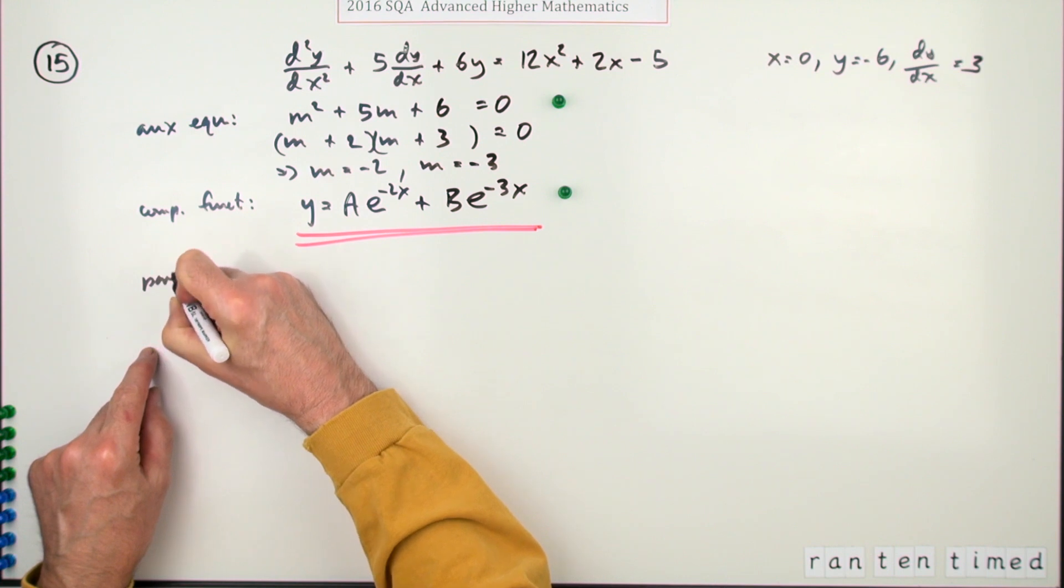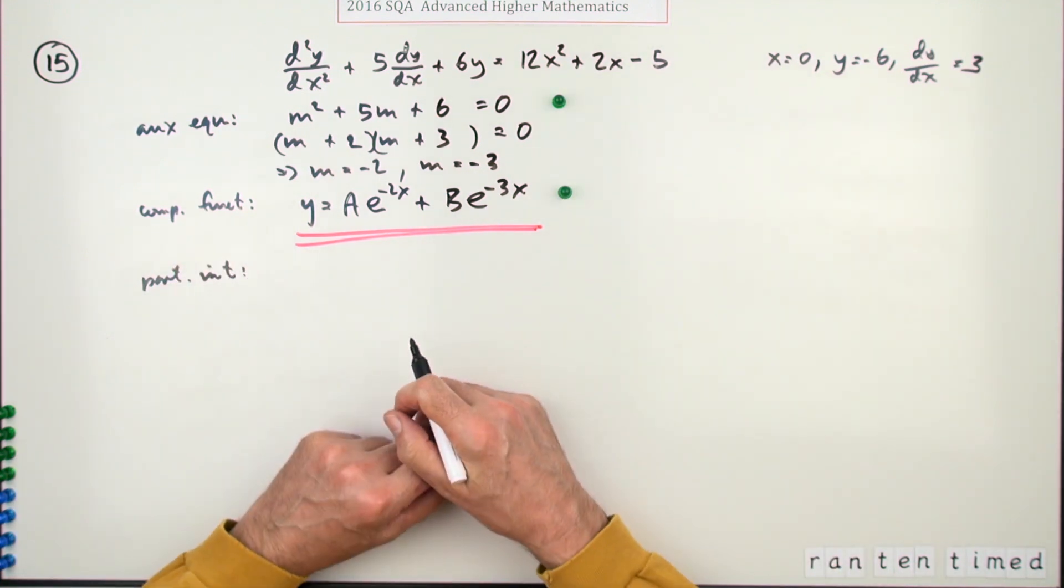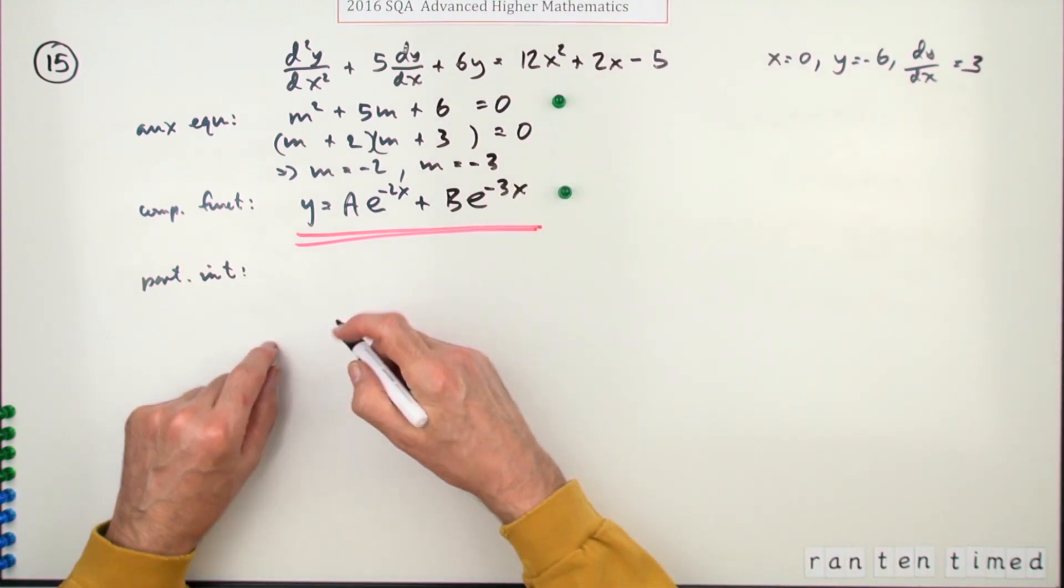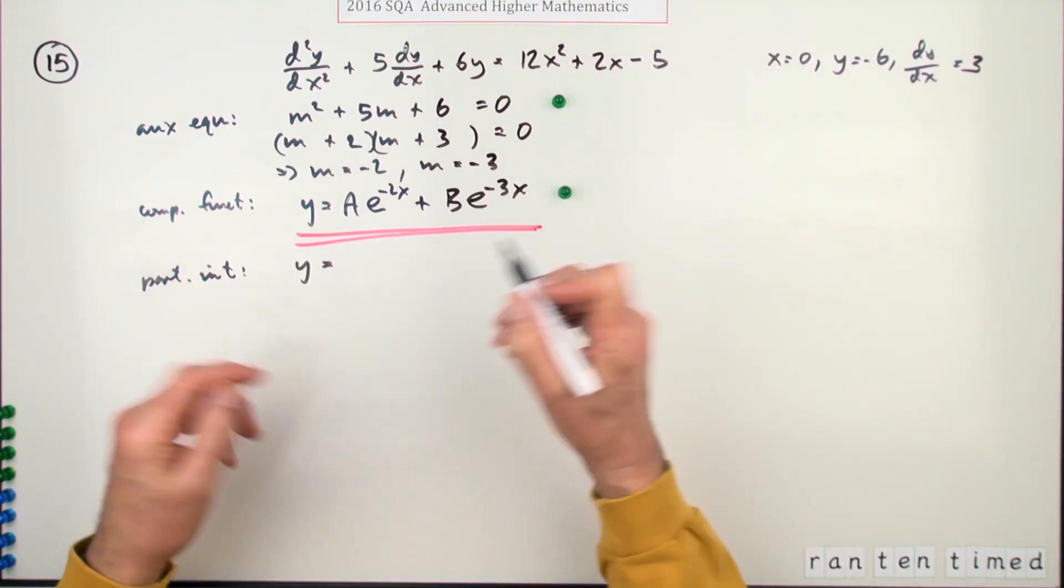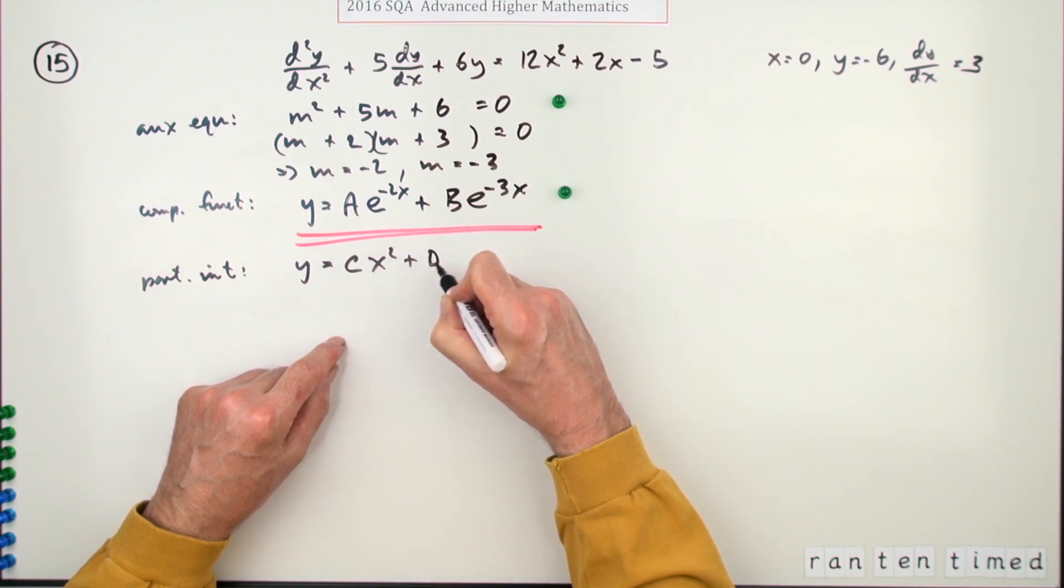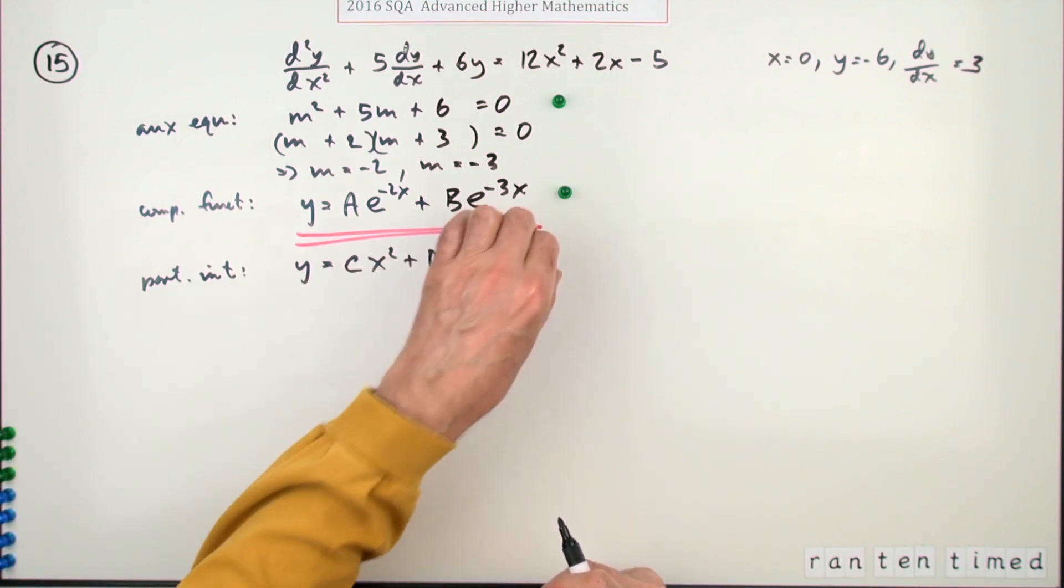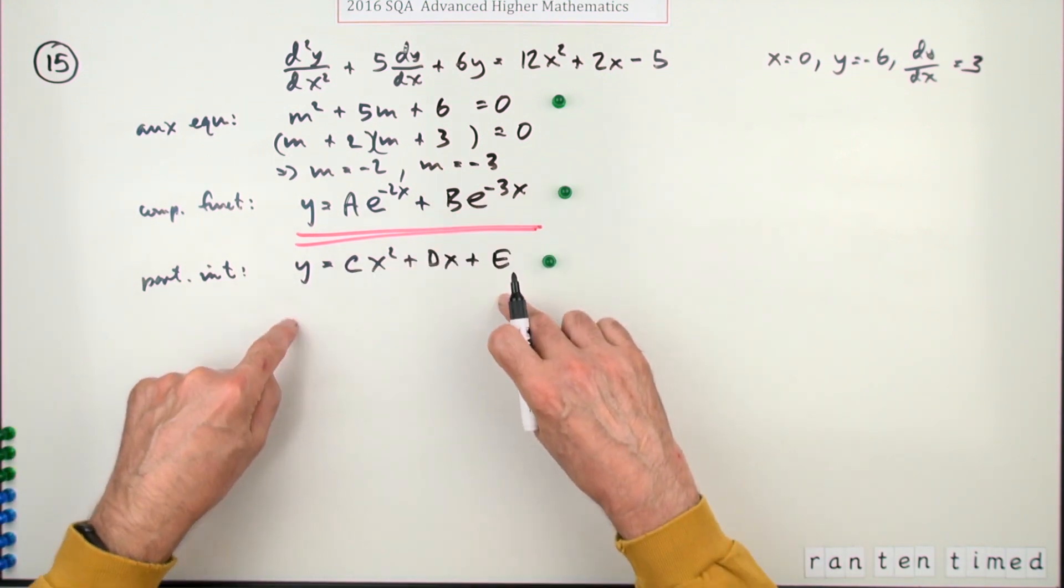Now what about the particular integral? What could work to produce this? Well, it's a quadratic, so obviously try a quadratic. I've used A and B already, so I'll go for C: cx squared plus dx plus e. And in fact, just writing down that gets you the third mark.